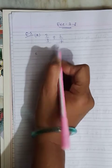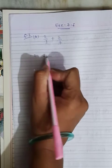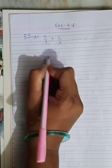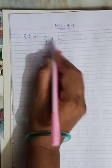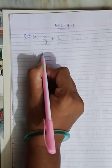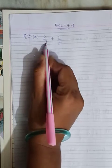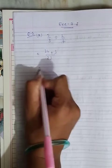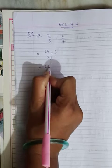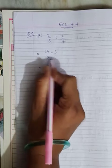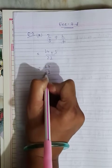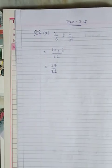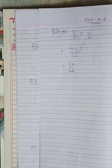The denominators are not the same here. You can use either cross multiplication or LCM. For small numbers, cross multiplication is easy. Two multiplied by seven is fourteen, and one multiplied by three is three; the denominator is three multiplied by seven equals twenty-one. So fourteen plus three gives seventeen upon twenty-one. That is your answer.